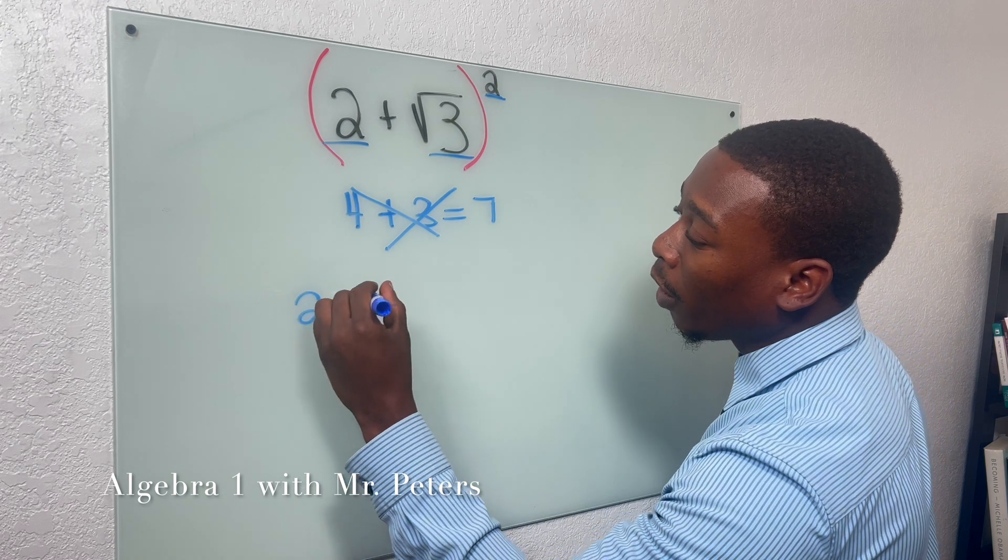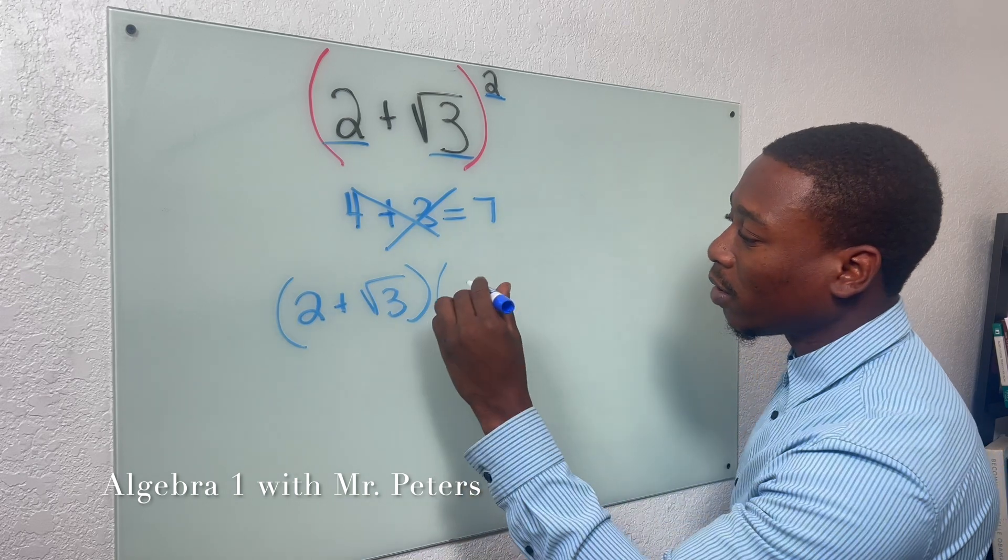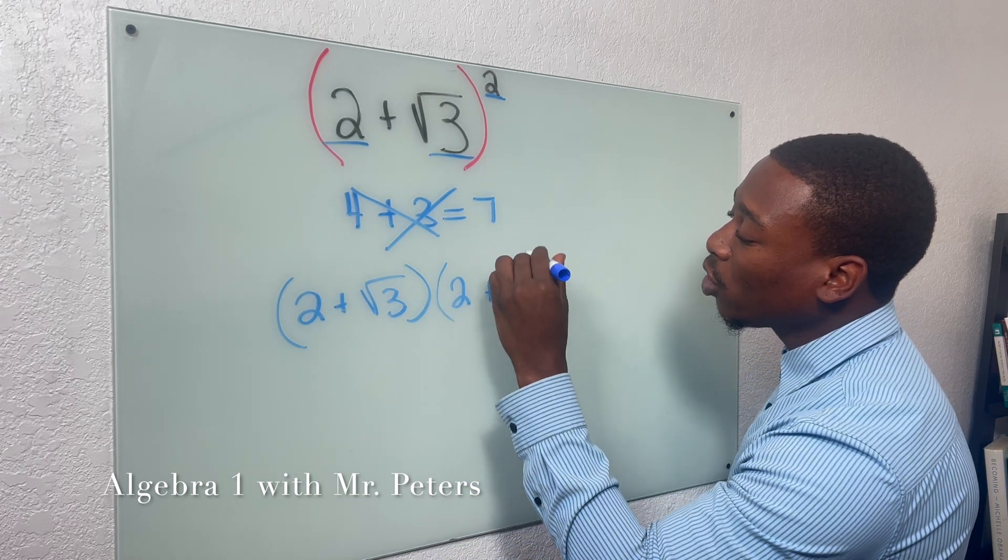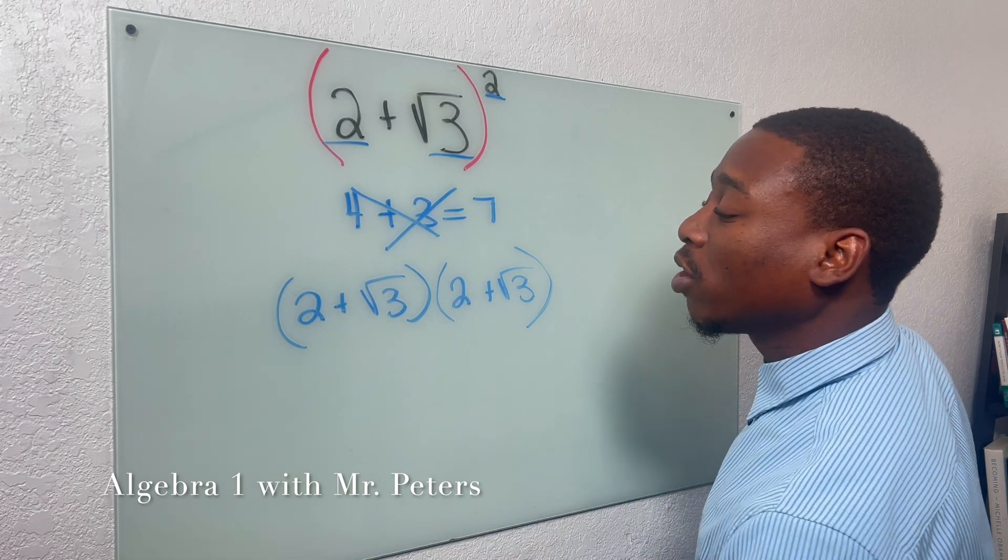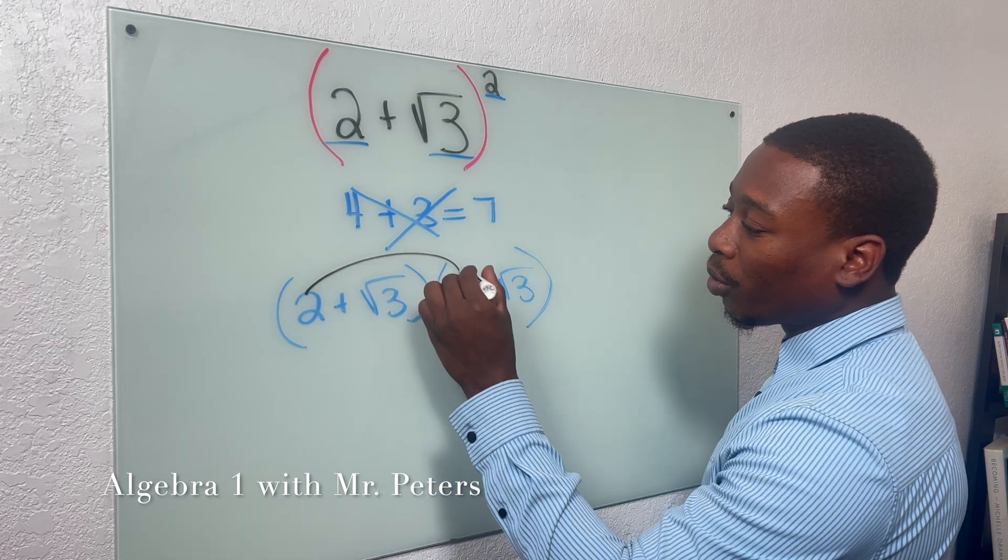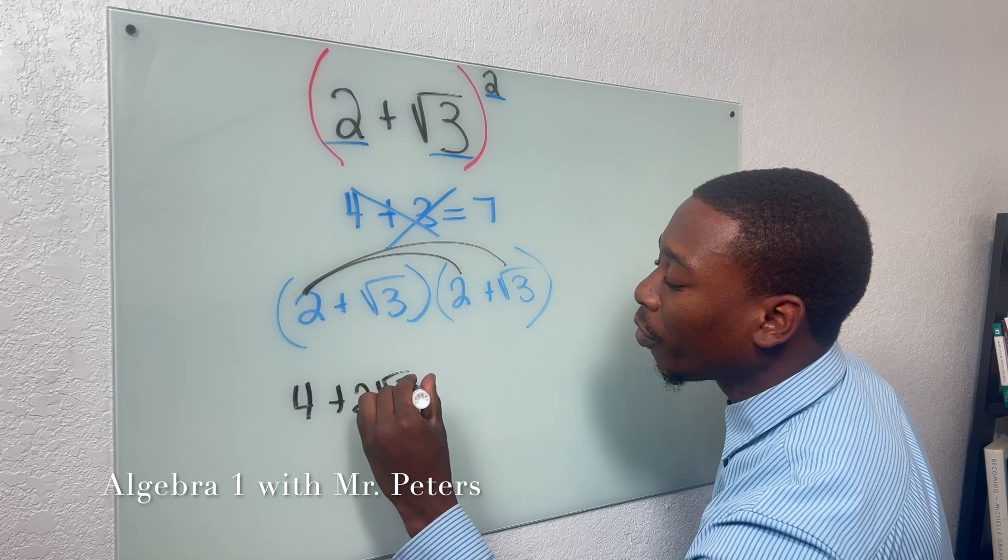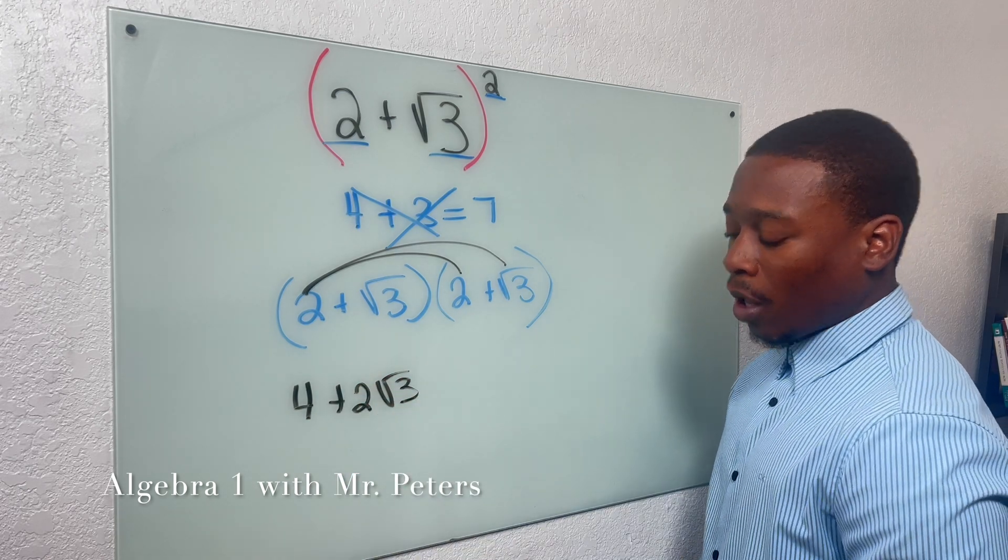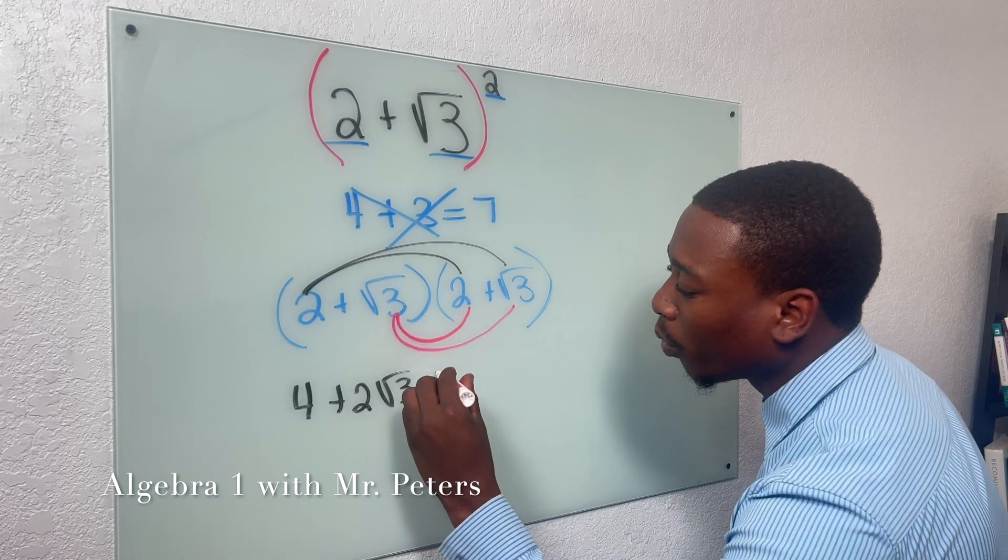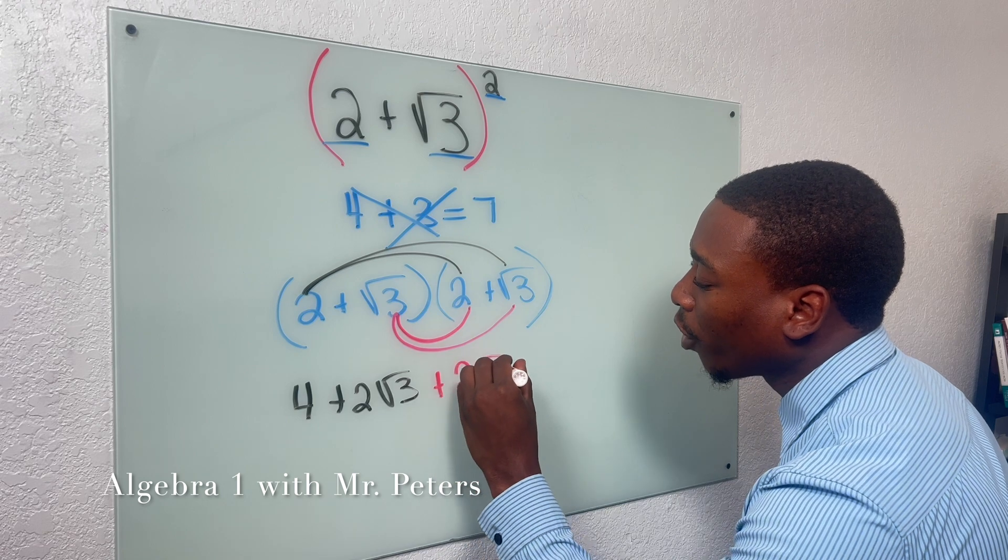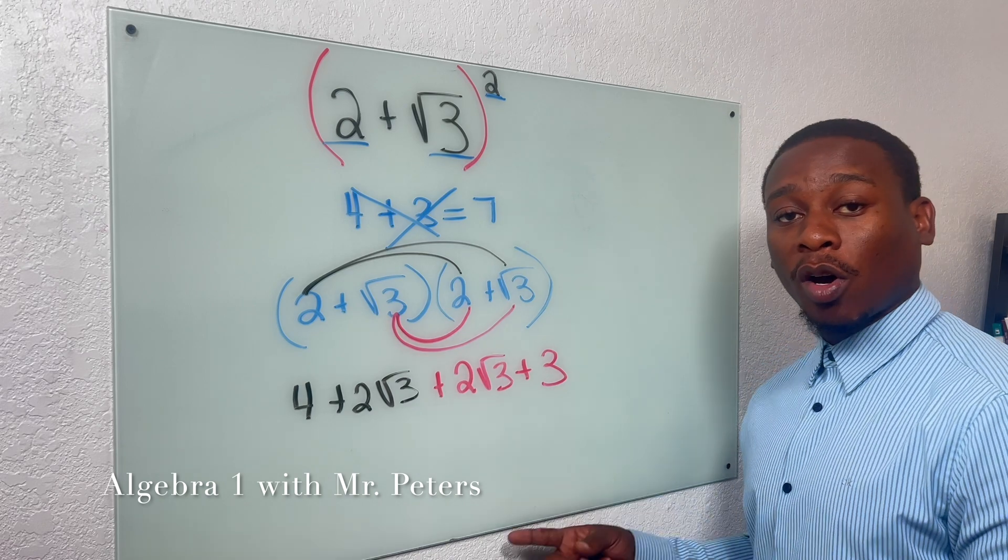When we see an expression like this, what it means is we're going to take it and we're going to multiply it by itself. Basically write it twice and then distribute. So this is what's going on with this problem. After we rewrite it now, we're going to use that principle of FOIL. So I'm going to take 2 and multiply it by both terms to get 4 plus 2 radical 3. And then I want to go back and do the same thing with the other term, radical 3. So once I multiply, I'm going to get 2 radical 3 again plus 3.